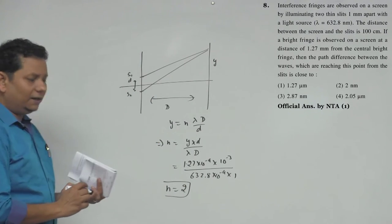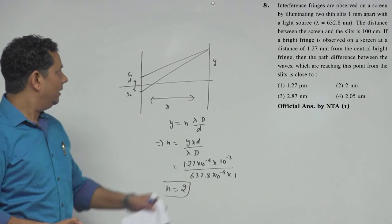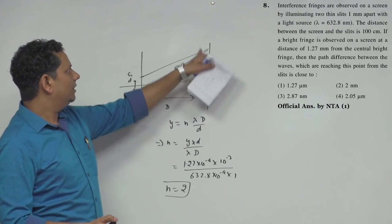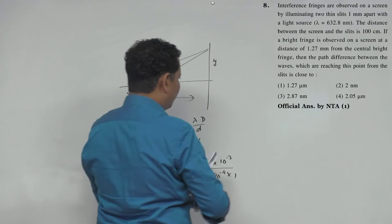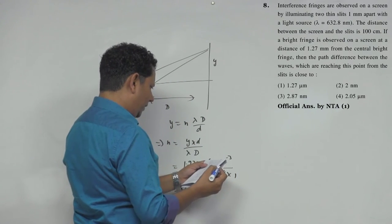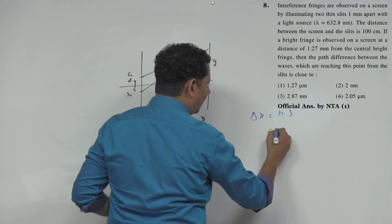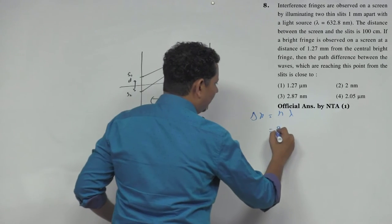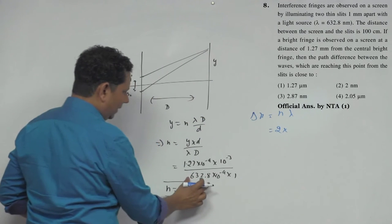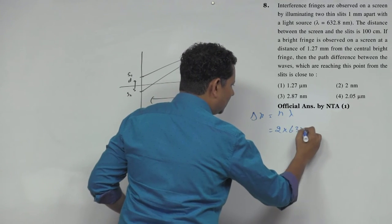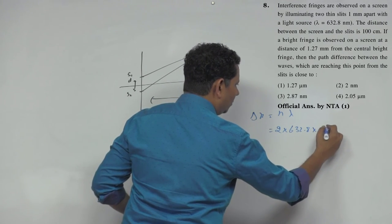When we calculate this, these will cancel, and the multiple of 632 gives us n value equal to 2. So the path difference will be n multiplied by lambda. Lambda is 632.8 into 10 to the power minus 9.